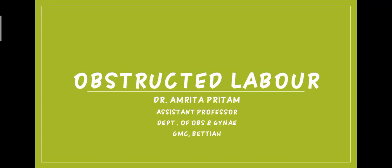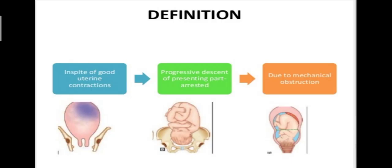Dear student, today I am going to discuss the topic of obstructed labour. First of all, we should know the definition of obstructed labour. Obstructed labour is the one where, in spite of good uterine contraction, the progressive descent of the presenting part is arrested due to mechanical obstruction. This may result either due to a factor in the fetus, in the birth canal, or both.